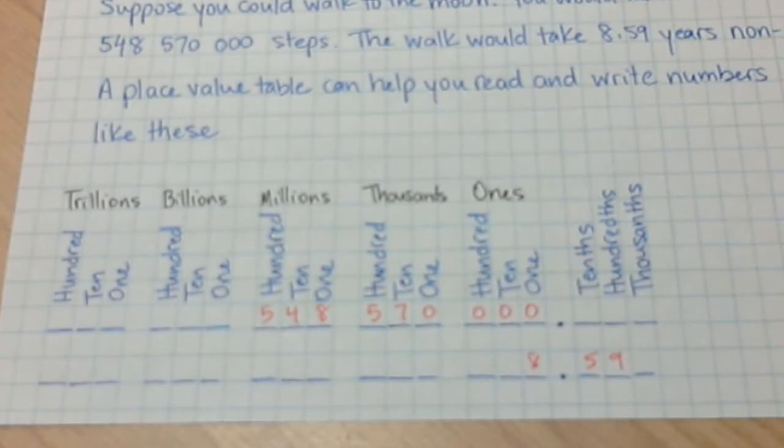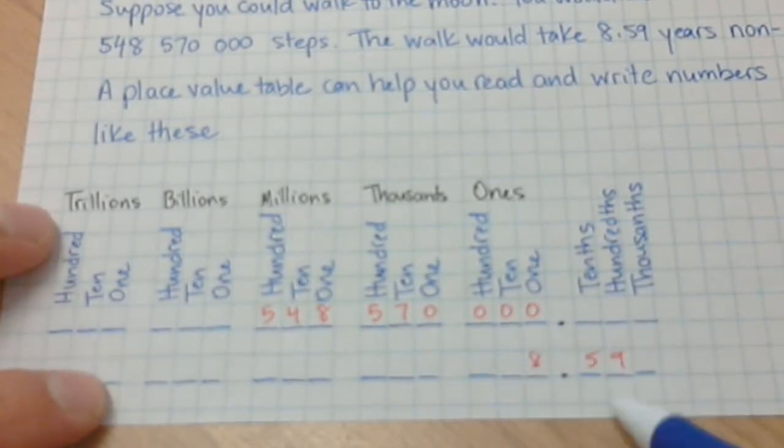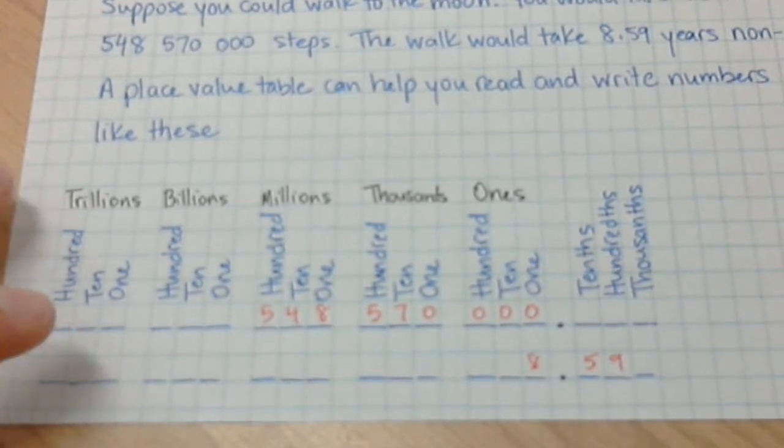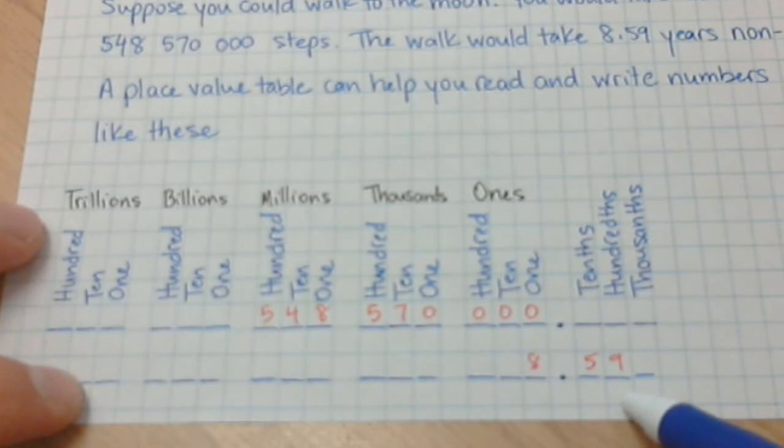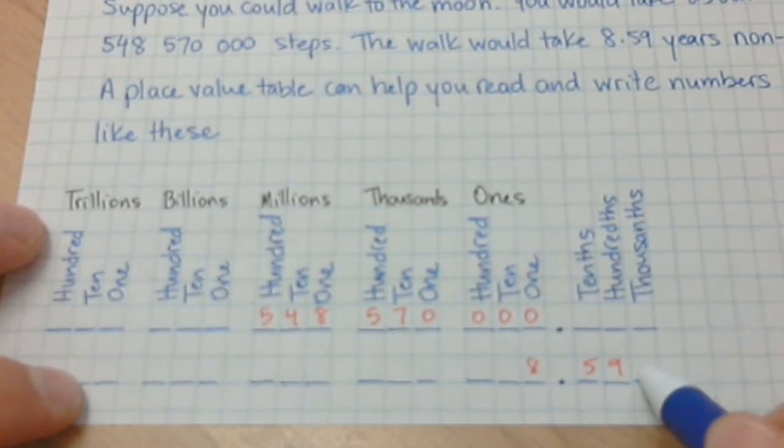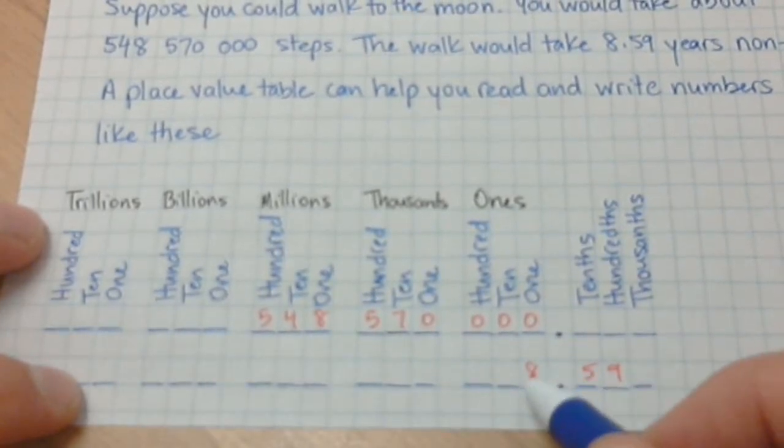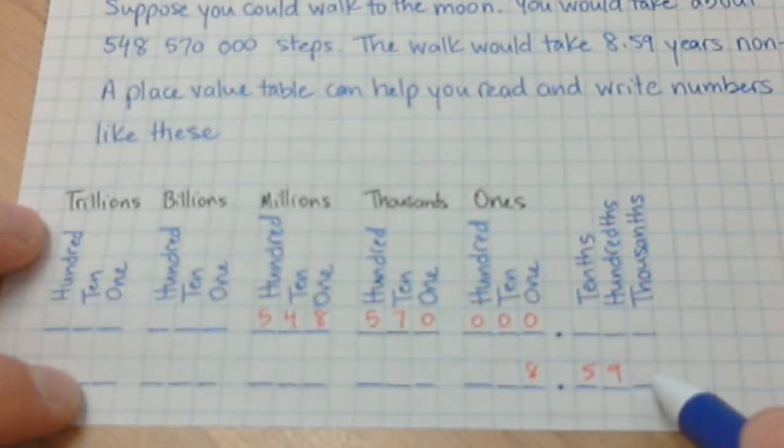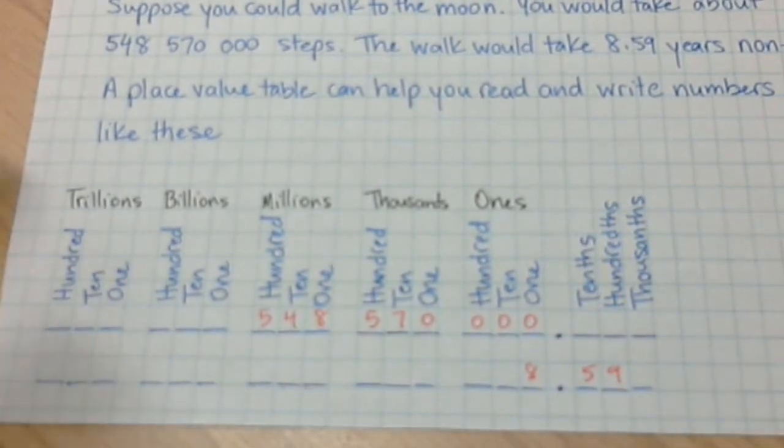That number 8.59, or 8 and 59 hundredths, goes like this. There's the 8 in the one spot here, and then the 5 goes in the tenths spot, and the 9 goes in the hundredths. To pronounce this, it's 8 and 59 hundredths. You look at the last digit and see what place value it's in. So if there was a 4 here, it would be 8 and 594 thousandths. That's our place value chart.